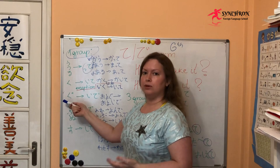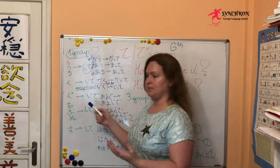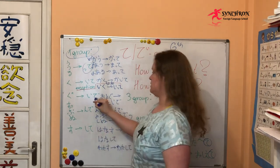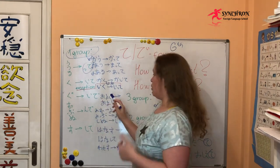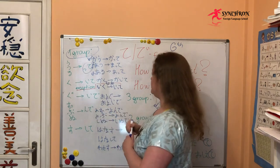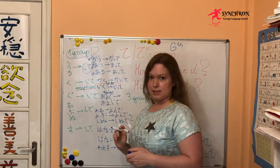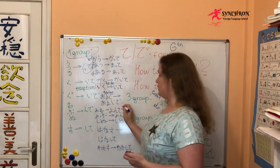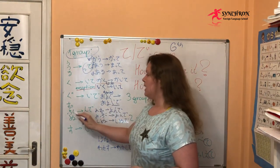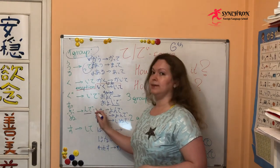The verbs ending with ぐ (gu) become those ending with いで (ide) — that's the de-form. This one is always de-form. 泳ぐ (oyogu, to swim) → 泳いで (oyoide). 泳いで ください — please swim. Those ending with む (mu), ぶ (bu), ぬ (nu) change into んで (nde) — so it's also de-form.